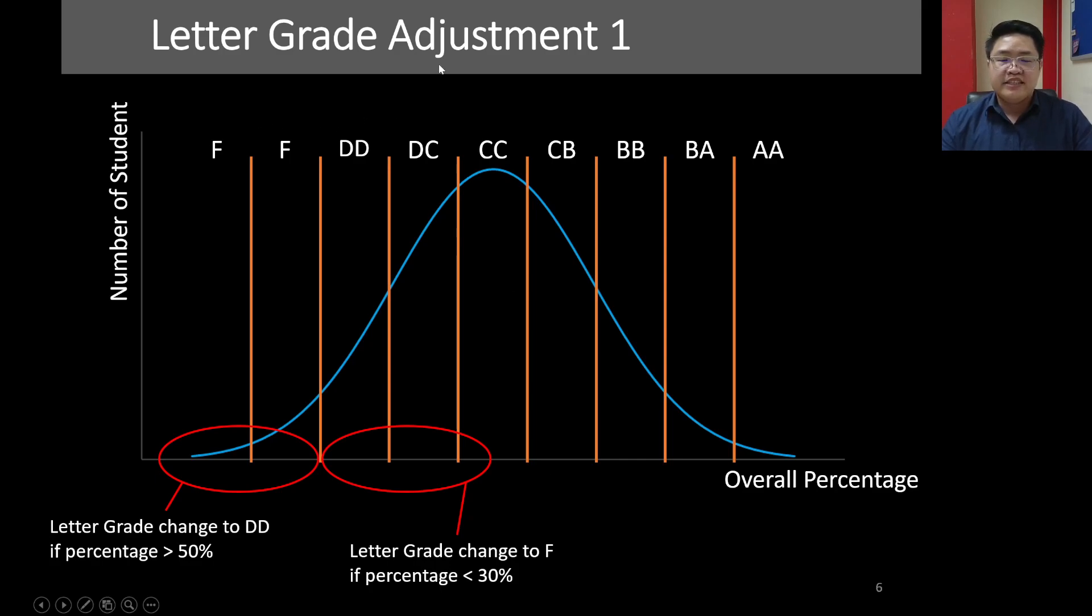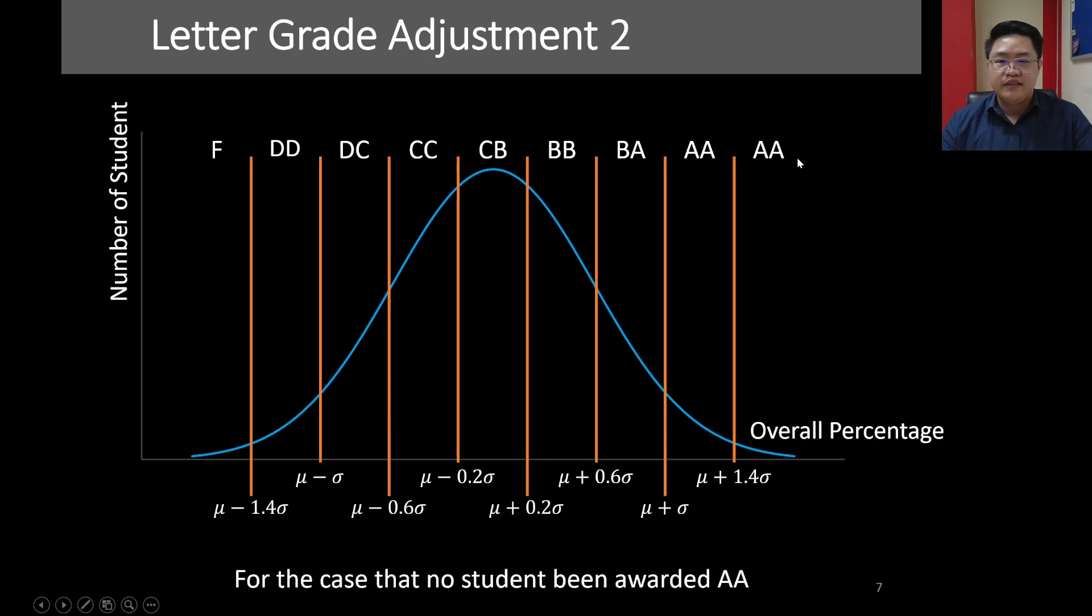Now before we look at adjustment number two, I want you to look at this order: two Fs, one AA. Now adjustment number two, for the case that no student is awarded AA, or in other words, no student has the overall percentage higher than average plus 1.4 standard deviation, the system would shift this grade one step down. So only one F now and two AA.